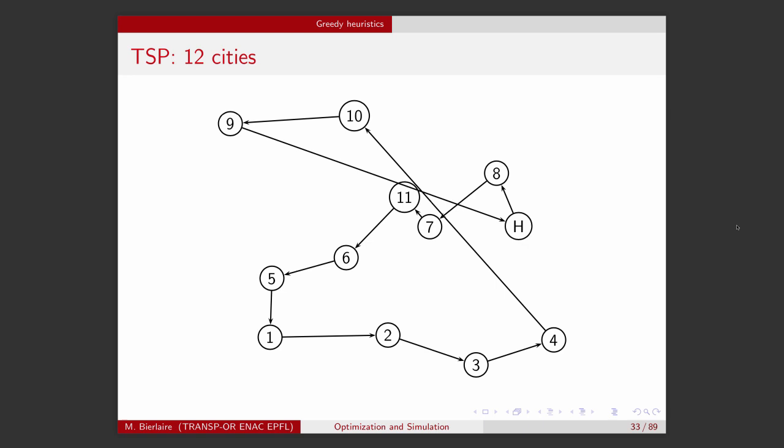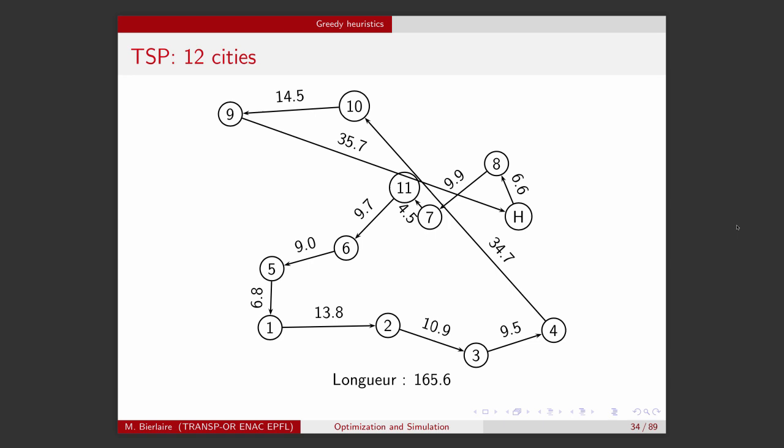So this is definitely a feasible solution. As you can see, you can have the intuition that it's not the optimal one. Here the lengths are the Euclidean distances between the nodes. And therefore I can calculate the total length of this tour, which is 165.6 units.